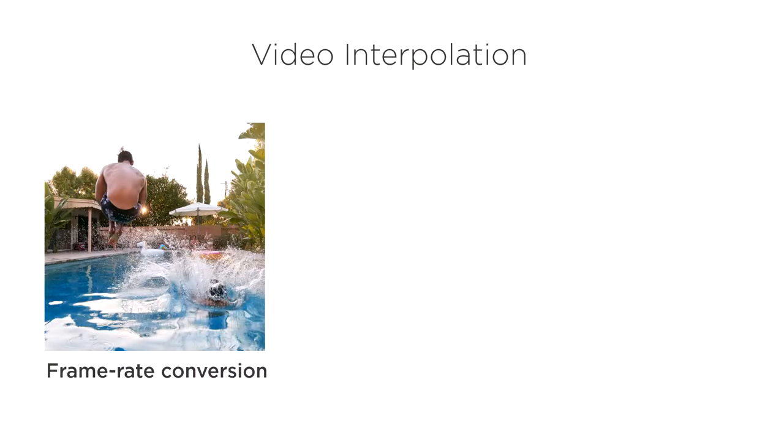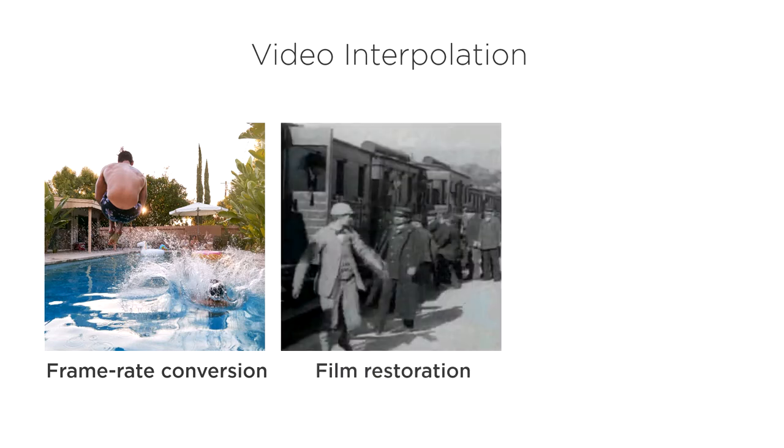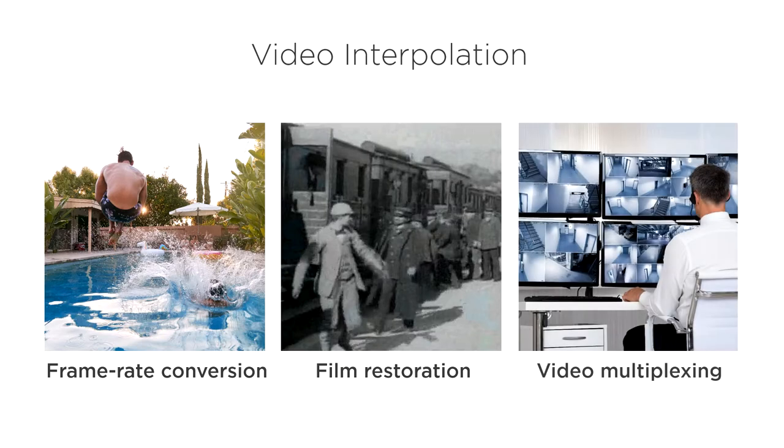Video interpolation is useful for a variety of video editing tasks. For example, creating super slow motion videos using frame rate conversion, restoring old film strips from manual crank cameras with inconsistent frame rates, and smoothing out security footage recorded using a video multiplexer.